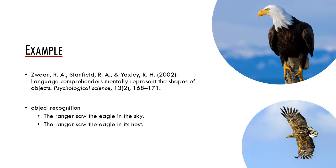Importantly, participants responded slower when the picture mismatched the implied shape than when there was a match between the shape implied by the sentence and in the picture. Zwaan, Stanfield, and Yaxley thus argue that comprehenders activate perceptual symbols that include the shape of objects even when the shape is not implied or articulated by the linguistic input. This is one of the many demonstrations that we create situation models during reading.